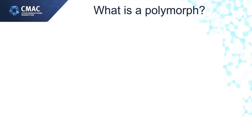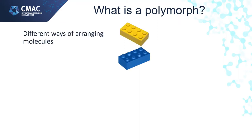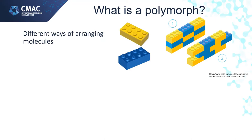First we need to learn what is a polymorph. We get polymorphs if the molecules of a material can be arranged in different ways. Let's think about this through Lego bricks. Let's think of a material made of two different molecules — here we have a yellow brick and a blue brick to represent two types of molecules. We can arrange the bricks in different ways; here are two ways of arranging the bricks in regular patterns. We can call the two different arrangements polymorphs.